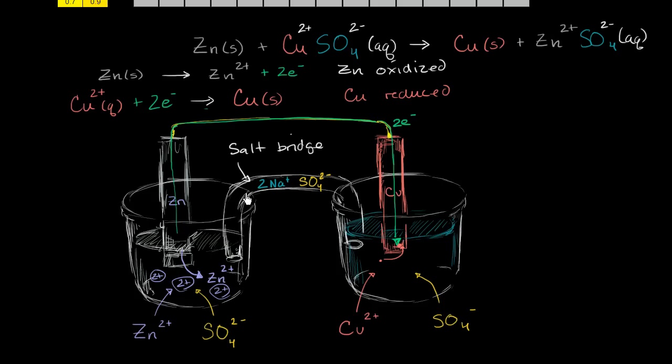Well, as this becomes more and more positively charged, as more and more positive zinc ions go into the solution, the negative sulfate ions are going to want to come out of here. So the negative sulfate ions are going to want to leave all of their negative friends right over here, go into the salt bridge. And then the ones that are already in the salt bridge are going to want to come out here.